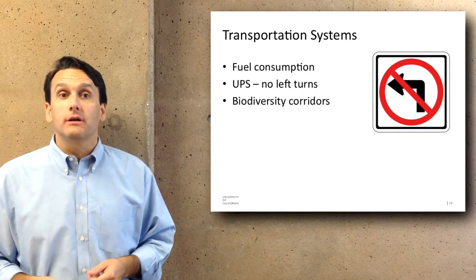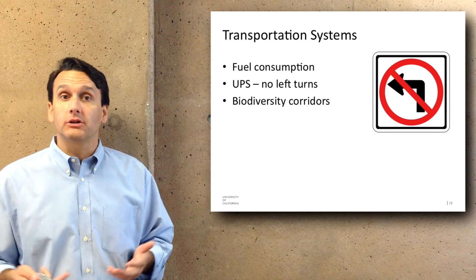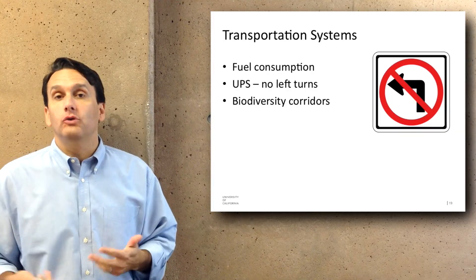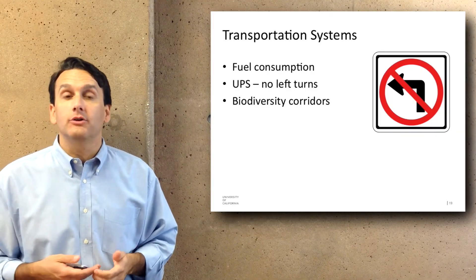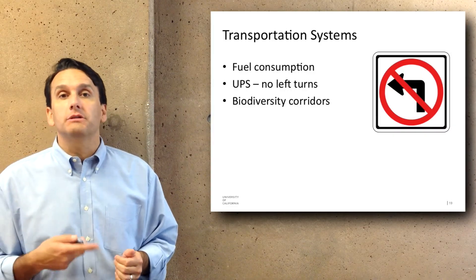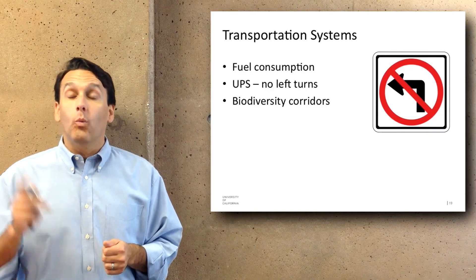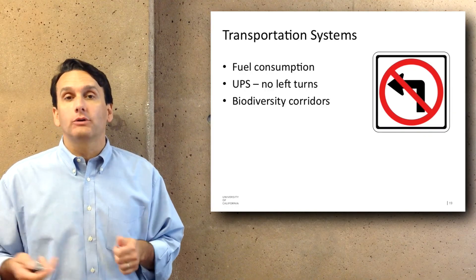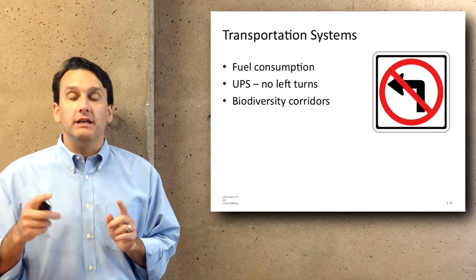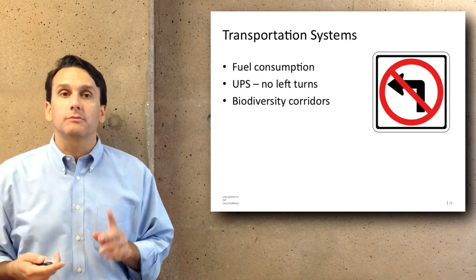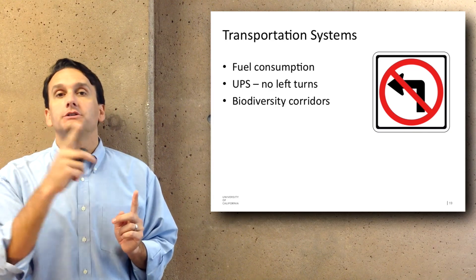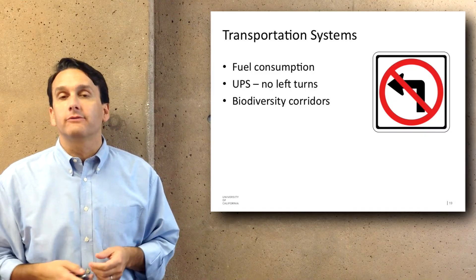In terms of transportation systems, they clearly use a great deal of fuel, particularly cars. There have been some ways different companies have tried to save fuel. UPS — the United Parcel Service — came up with algorithms that allow them to more effectively deliver packages. What they did essentially is factor out left turns: they found drivers were spending a long time waiting at left turns, so they plotted out paths using computer algorithms so drivers only had to make right turns. That allowed them to be much more effective at delivering packages economically.